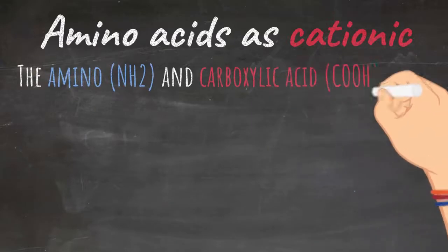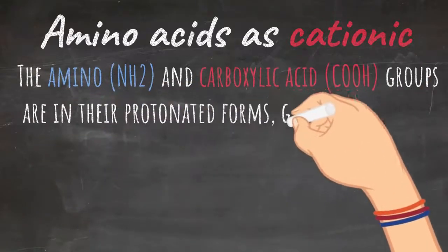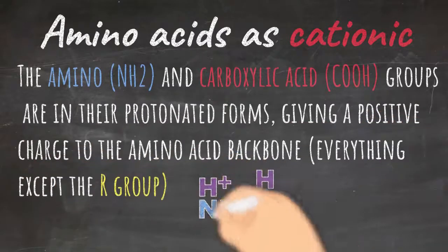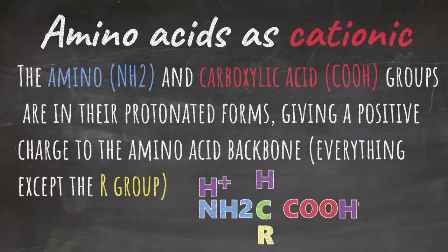The amino, NH2, and carboxylic acid, COOH groups, are in their protonated forms, giving a positive charge to the amino acid backbone. The amino acid backbone includes everything except for the R group of the amino acid.